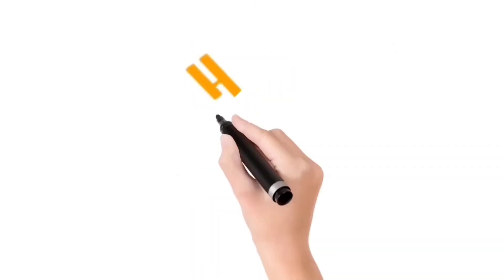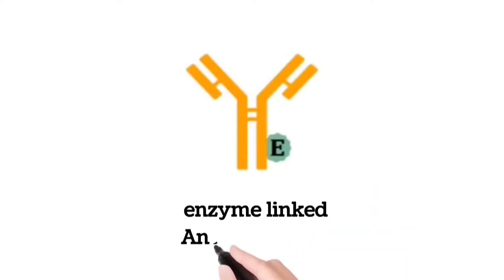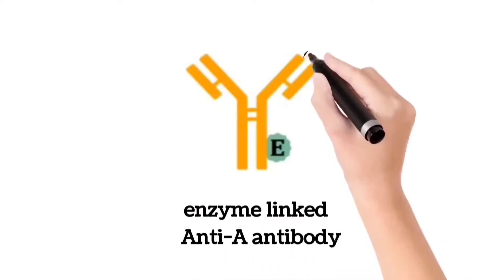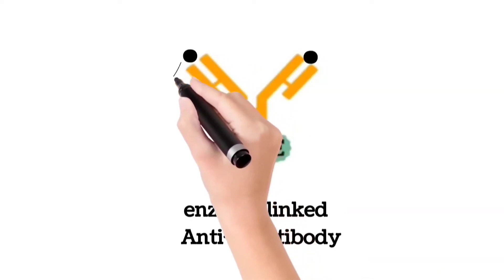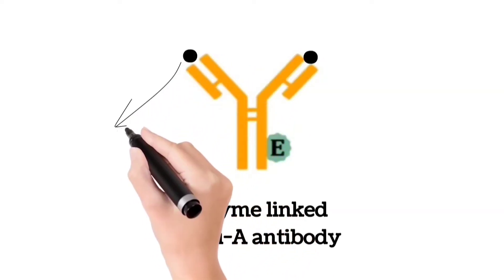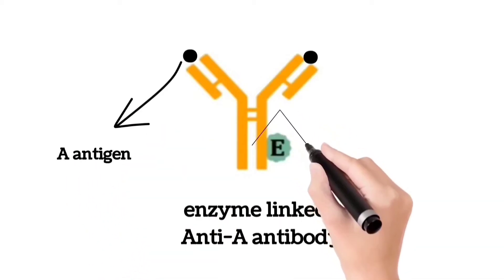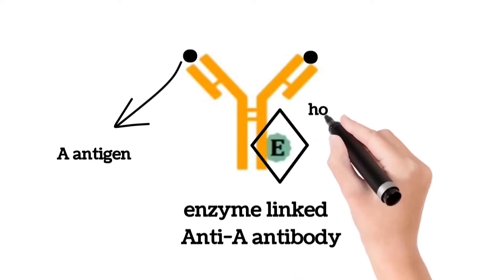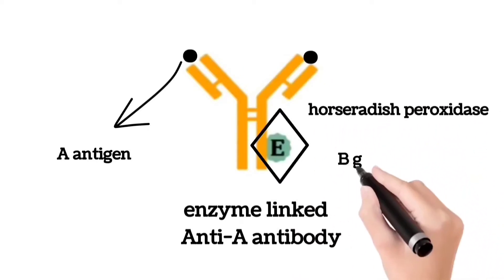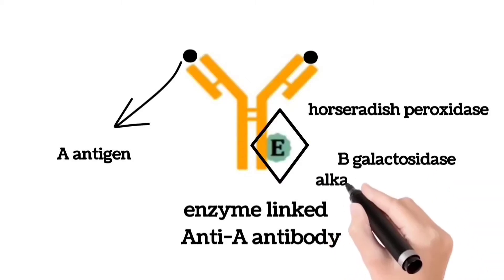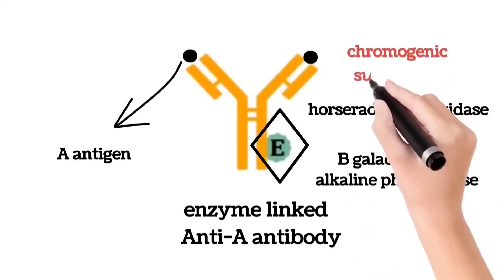The second and most important requirement is the enzyme-linked anti-A antibody. This antibody also binds to the A antigen, just like the antibodies present in the sample, but this antibody is coupled to an enzyme. The enzyme can be horseradish peroxidase, beta-galactosidase, or alkaline phosphatase — all of which act on chromogenic substrates.